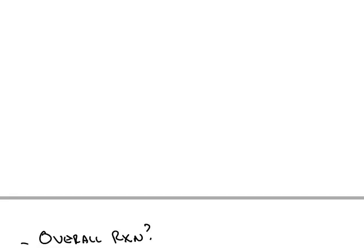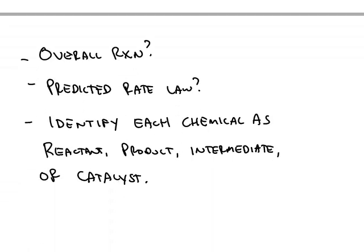So, from that mechanism, we can figure out the overall reaction, what the predicted rate law is for that mechanism, and then we can also identify what type of chemical each chemical happens to be.